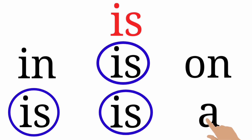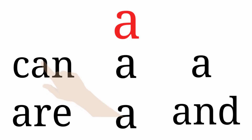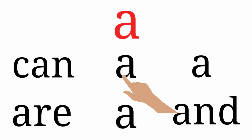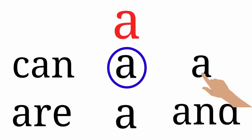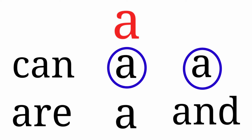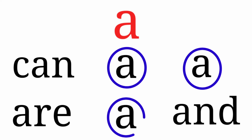The last one is 'a', which is different. The next one is C-A-N — 'can' — which is different. The next one is 'a', which is same, so we are going to circle it. The next one is 'a', which is also the same word, we are going to circle it. Next one is A-R-E — 'are' — which is different. The next one is 'a', which is same, so we are going to circle it.